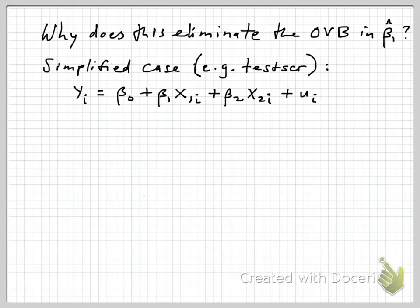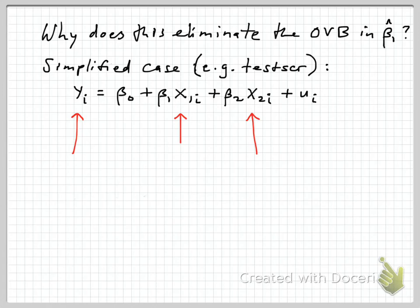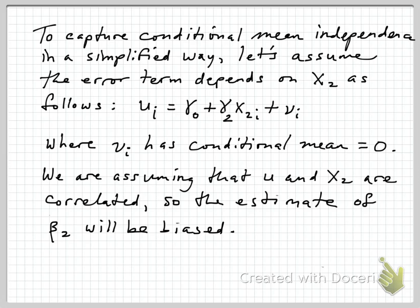Why does this work to eliminate omitted variable bias in our estimate of beta 1, the effect of interest? I'm going to look through a very simplified case with a number of simplifying assumptions to give you a feel for what is going on when we include these control variables. We've got our outcome variable — in our example, the test score — our variable of interest x1, for example class size or student-teacher ratio, and then a single control variable x2, something like the percentage of kids on subsidized meal plans. That's our simplified two-regressor model with one control variable x2 and one variable of interest x1.